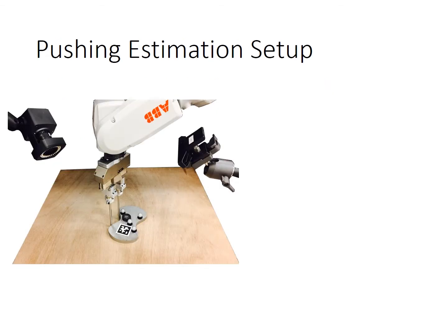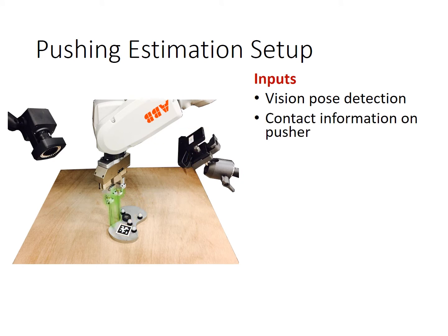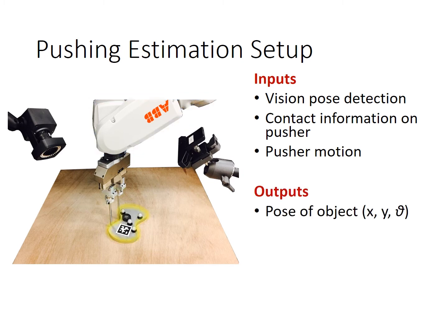To answer this question, we create an experimental setup: a pusher-slider system. We want to create an online observer that accepts the following inputs: vision pose detection from a webcam, contact information on the pusher, and pusher motion from the robot. The observer should output the pose of the object in real-time, as accurately as possible. A Vicon system is used to collect accurate ground truth.